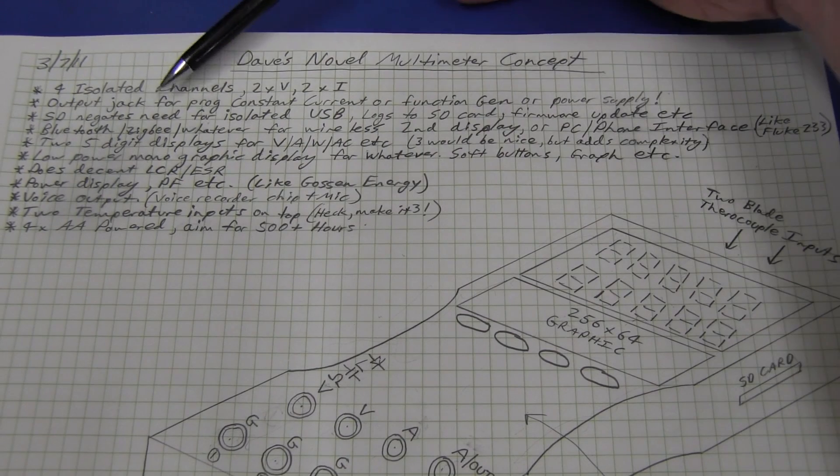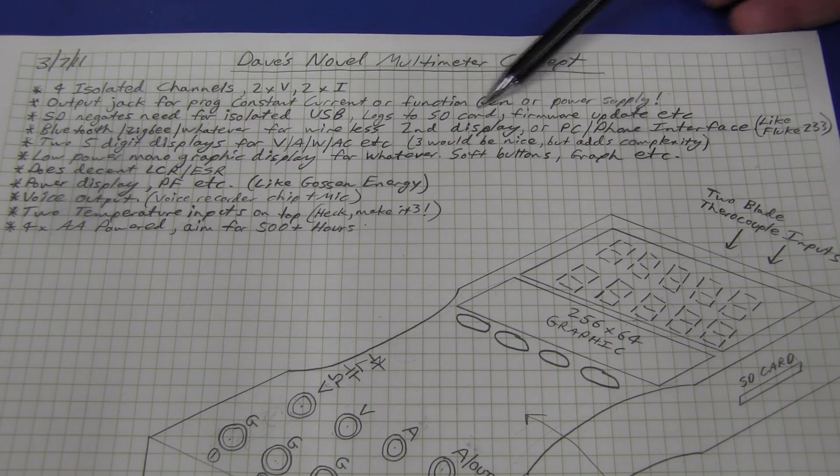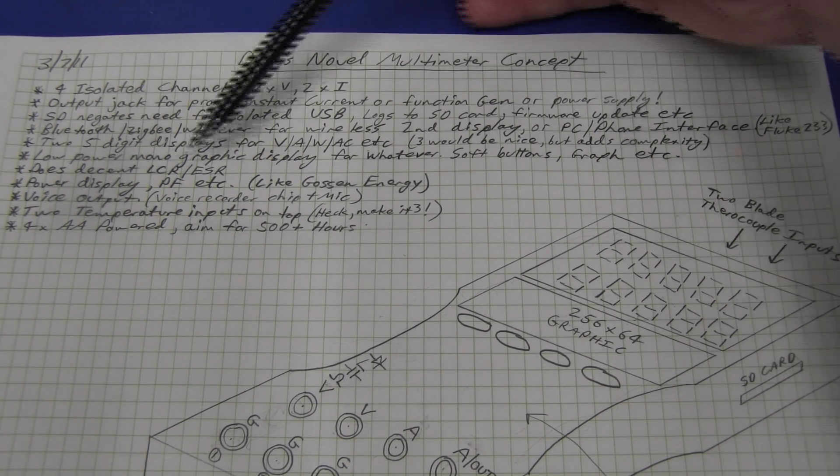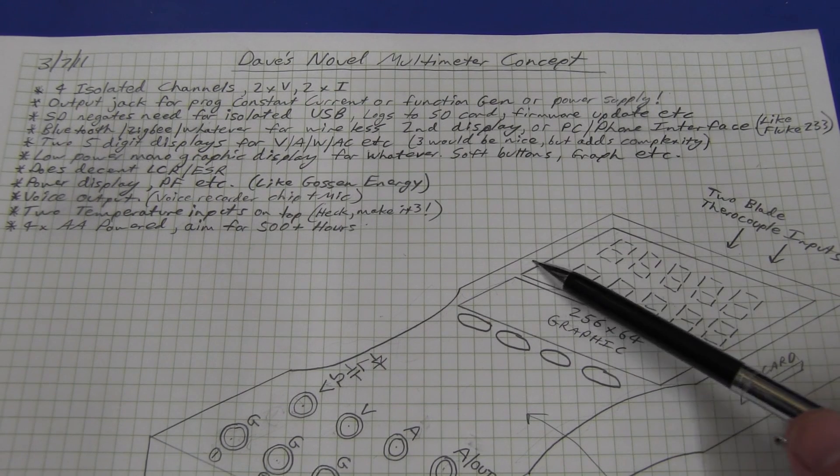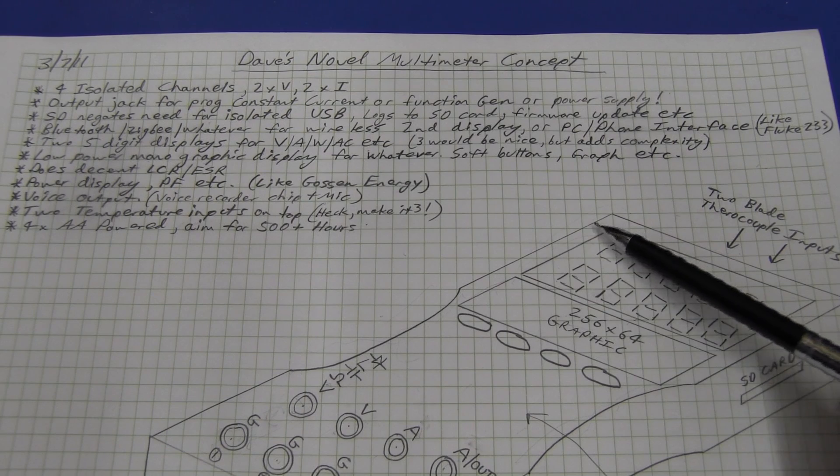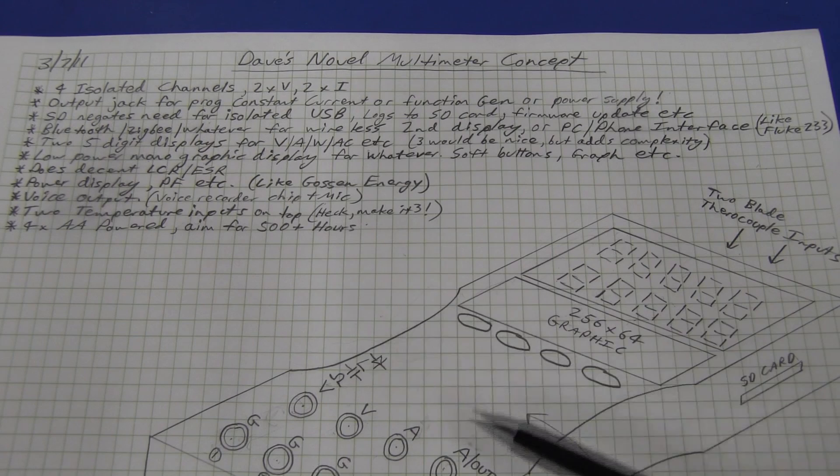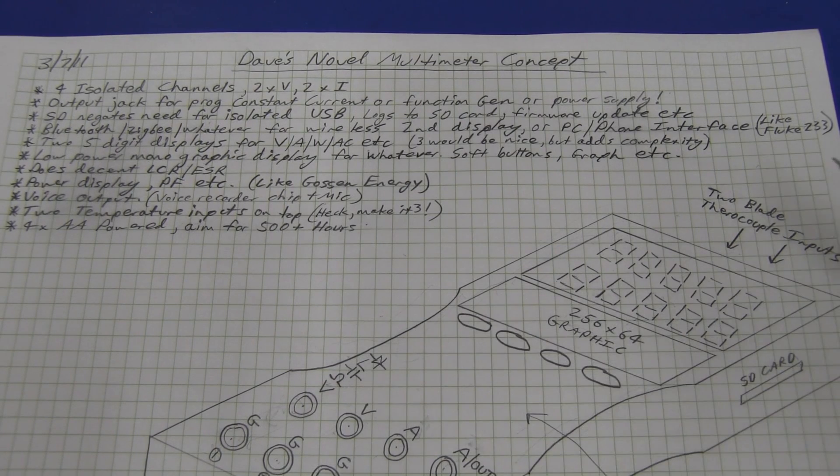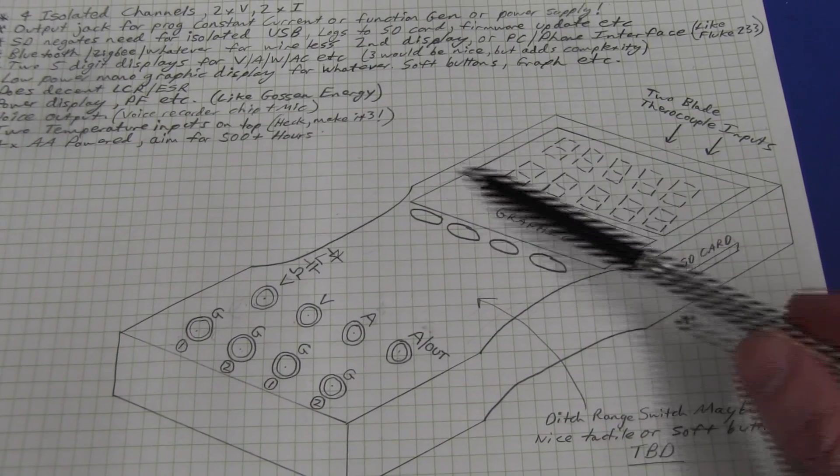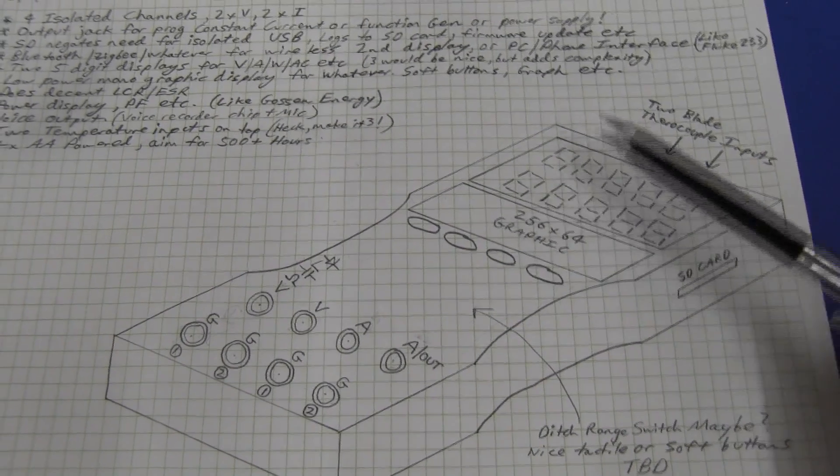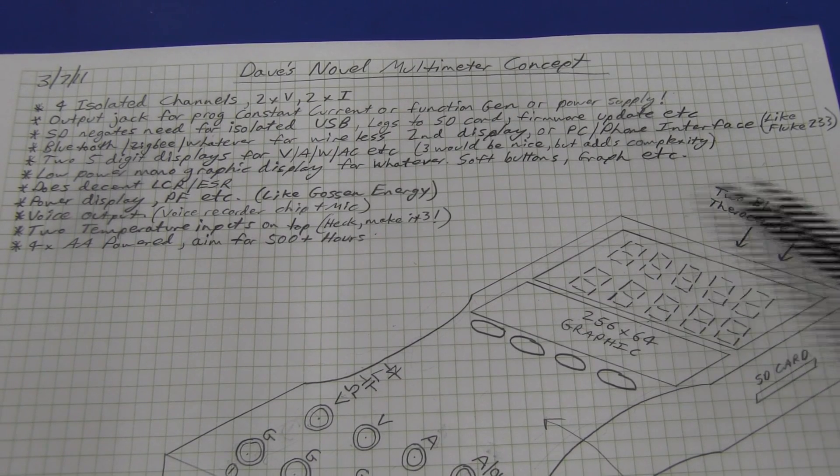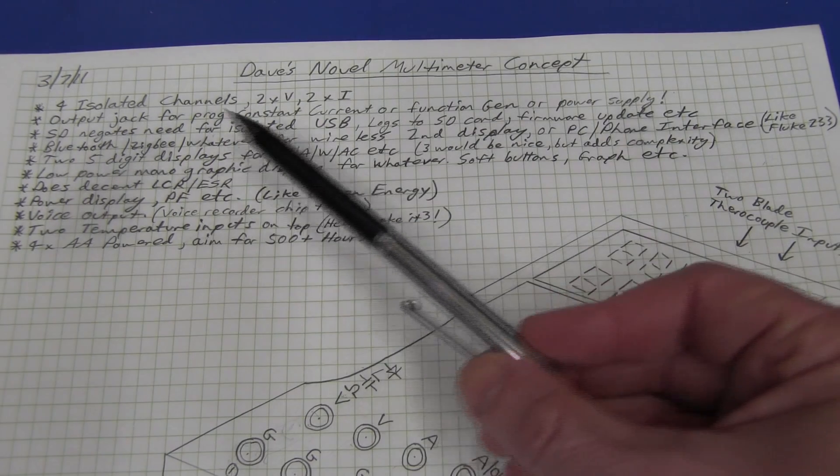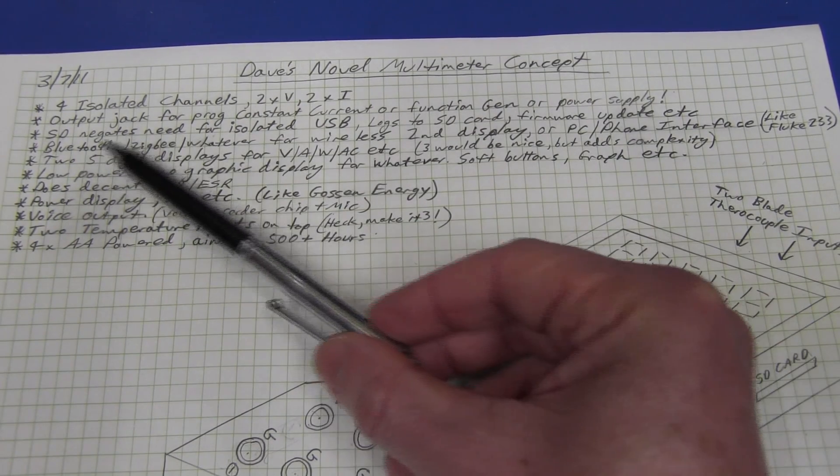And I think what would be real handy is a little power supply output. You can adjust from say zero to, I don't know, six volts or something like that. And you could power your project. Sure, you're going to suck your batteries dry if it takes a fair amount of current. But there's so many projects these days that require small amounts of power. And why not have your multimeter supply that power once again isolated to your project. I think that would be terrific. Now we talked about the SD card negating the need for the isolated USB there and logging. So I don't need to talk about that anymore.